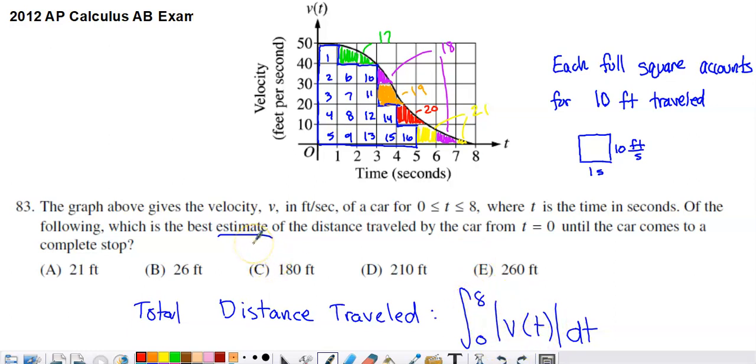So the way that I am thinking it makes sense to make this estimate is to just think about the space between this graph and the t-axis. A definite integral is going to represent a signed area, right? And so if I'm trying to find the signed area, I can just look at the boxes that are fully enclosed between this velocity curve and the t-axis. So you see the ones that I've marked in blue, they're fully accounted for between the curve and the t-axis.